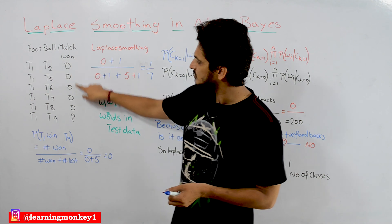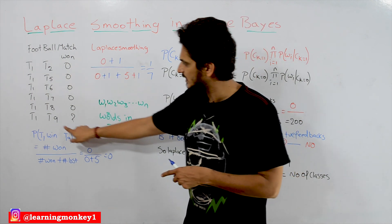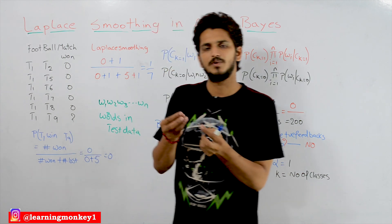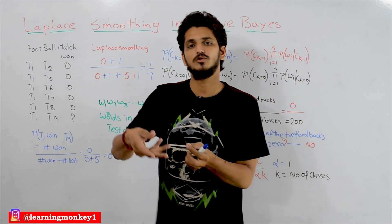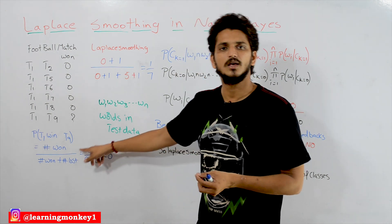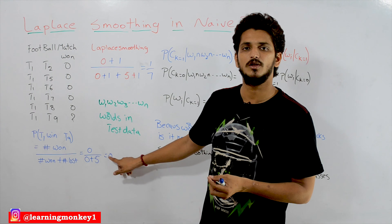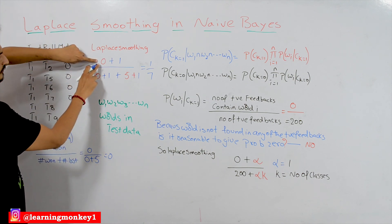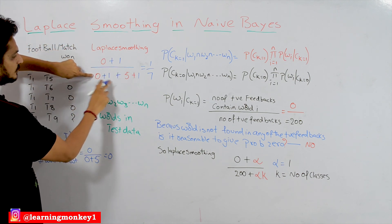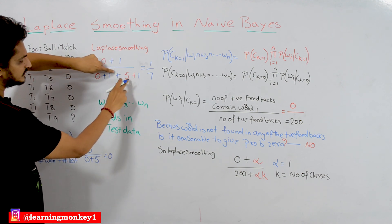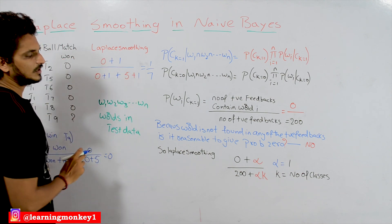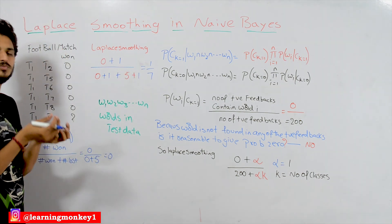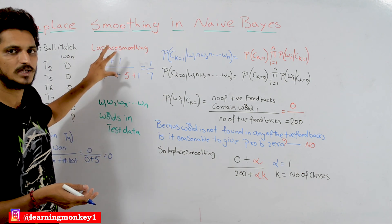Because T1 has lost all the games before, can we say T1 will not win on T9? No, we cannot say 0. We have to give some small probability — chances are very less, but not zero. What Laplace smoothing does is add 1 to each value. So it becomes: (0+1) divided by (0+1 + 5+1), which is 1 by 7. We get a small probability value. This is what Laplace smoothing is — adding 1 to all the values.